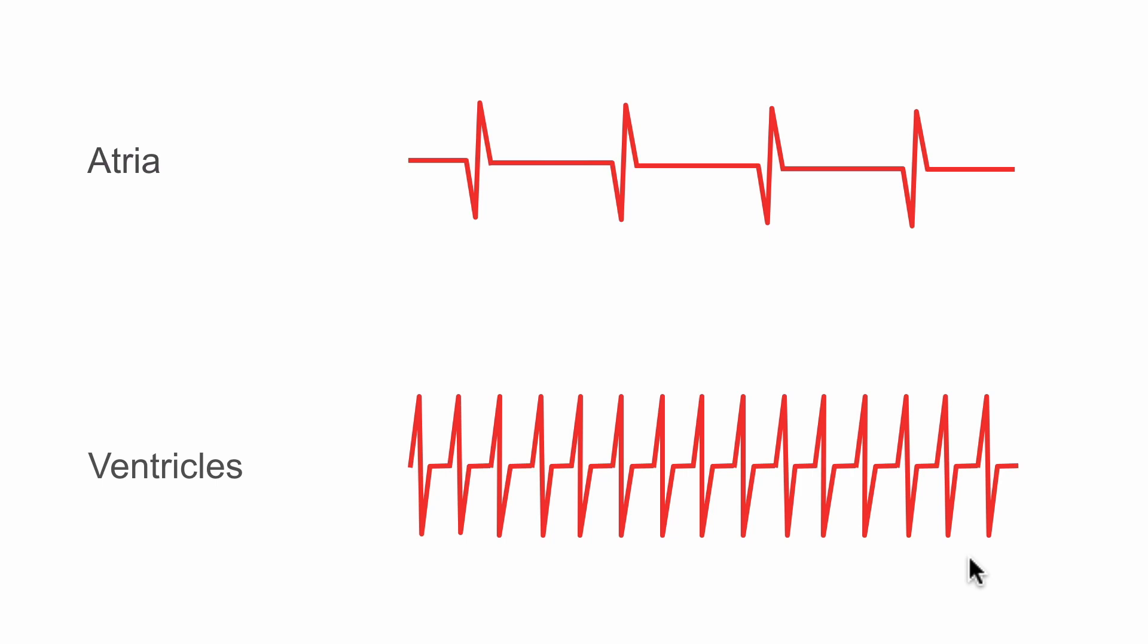Now because there's more ventricular events than atrial events, we can be really confident in saying that this is a ventricular arrhythmia. And that's key—that essentially the more leads you have in the heart, the more information you're able to gain. And that's really useful in determining exactly what rhythm a patient is in.